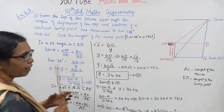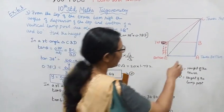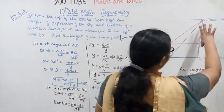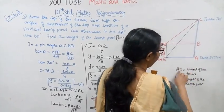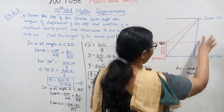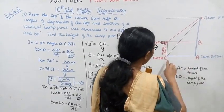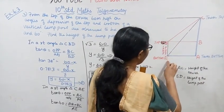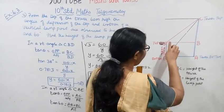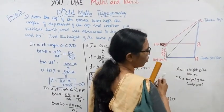I will explain the diagram. AC is in the middle — AC is the height of the tower. Here is the lamp post.